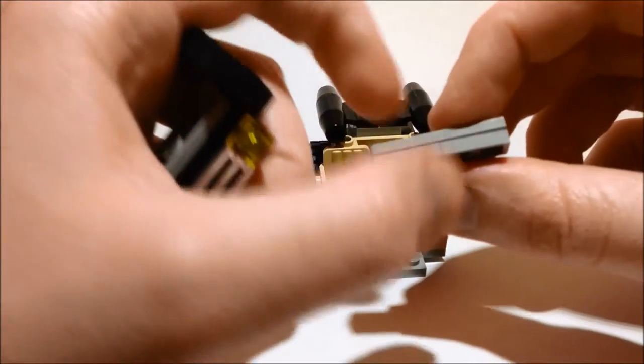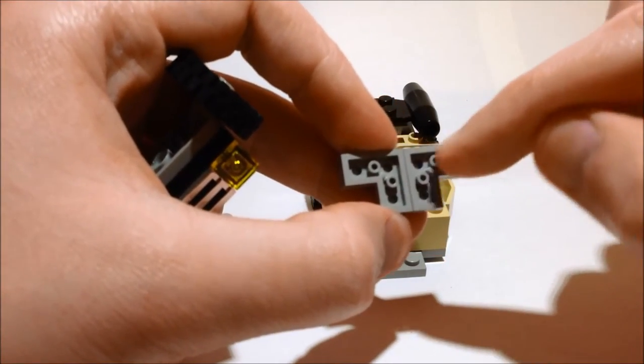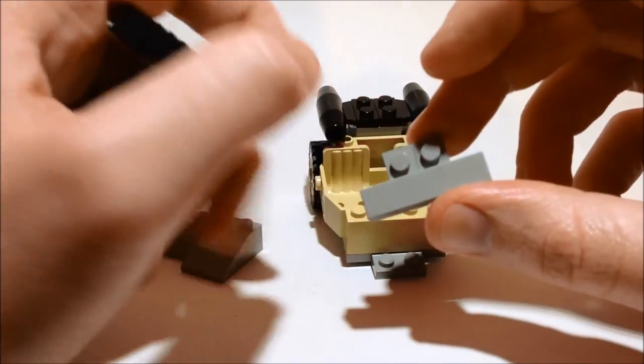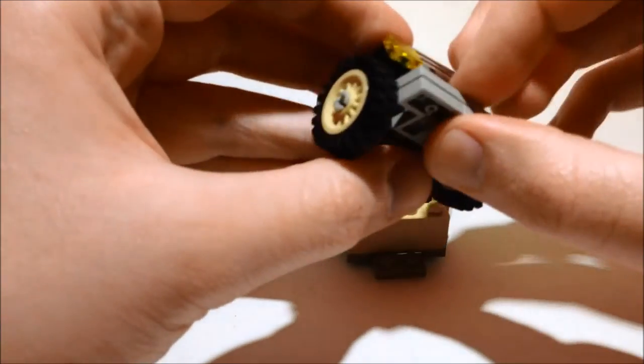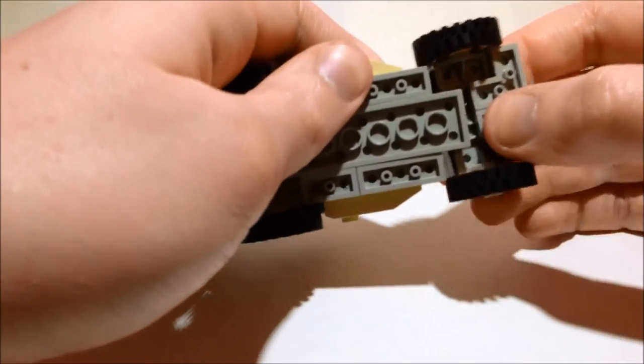And then we have the front bumper piece, which is yet again more of these 2x2 angle pieces in light grey with a 1x4 tile. That goes on like that and then this attaches on the end here.